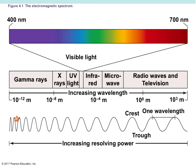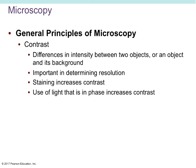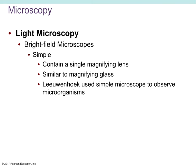Contrast is the difference in intensity between two objects or an object and its background. Staining helps to increase that contrast, and the use of light in phase increases contrast as well. Contrast is really just the ability to have your specimen stand out. Our primary tool in introductory microbiology is the light microscope — specifically bright-field microscopes. Dark-field microscopes are useful for viewing things you don't want to stain, as they stand out against a dark background.